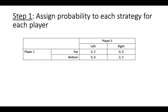The first step is to assign a probability to each strategy for each player in the game. Let's let player 1 play top with probability p and bottom with probability 1-p.